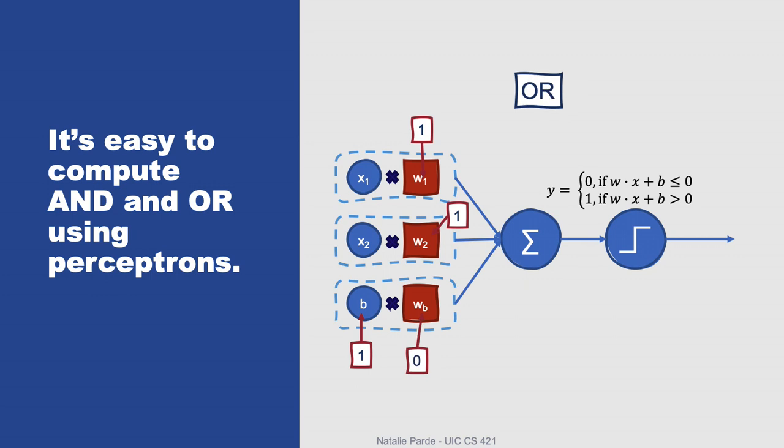We can compute OR using an almost identical network where we just substitute the weight for the bias term to zero instead of negative one. Again, this will produce values identical to what was shown in the truth table for OR.